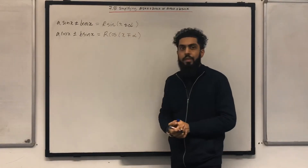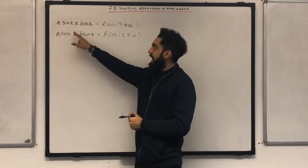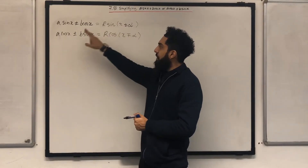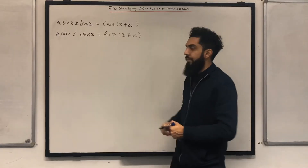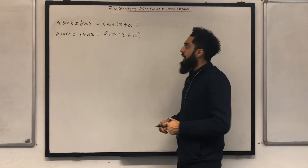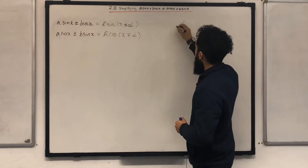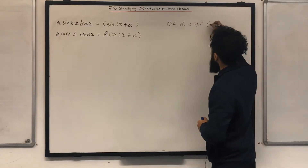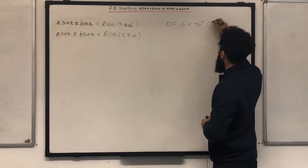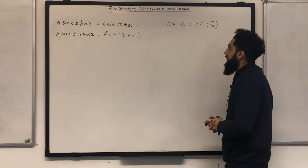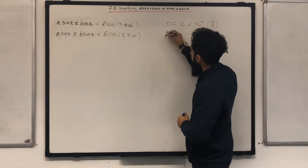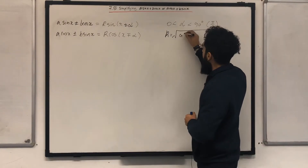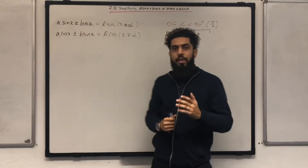Very important: the plus becomes a minus and the minus becomes a plus in the second form. Alpha is between 0 and 90 degrees, which is equivalent to pi over 2 radians. R is calculated by taking the square root of A squared plus B squared.